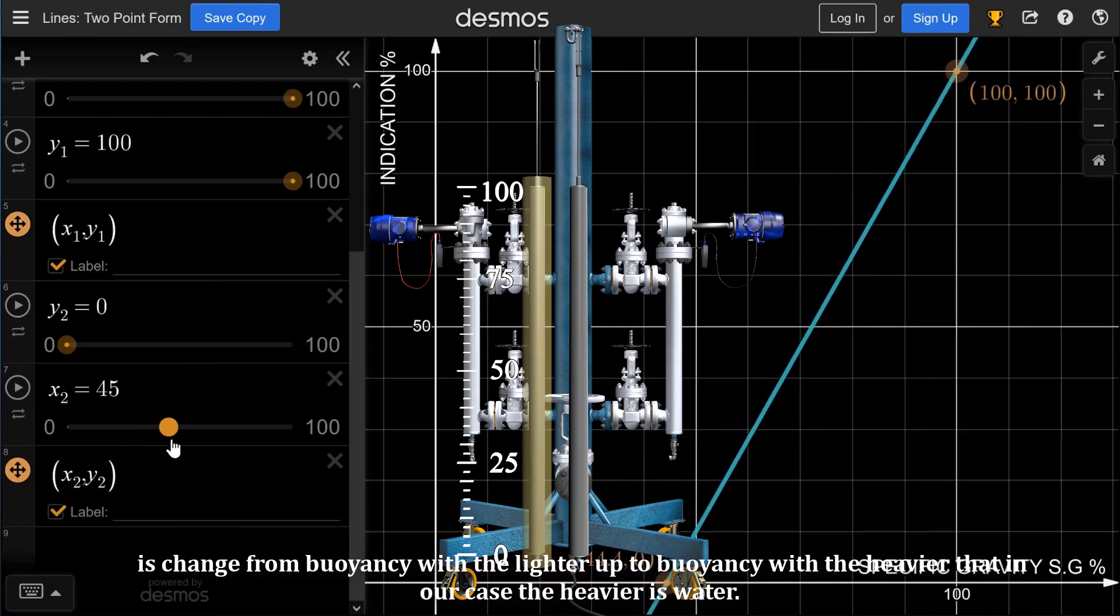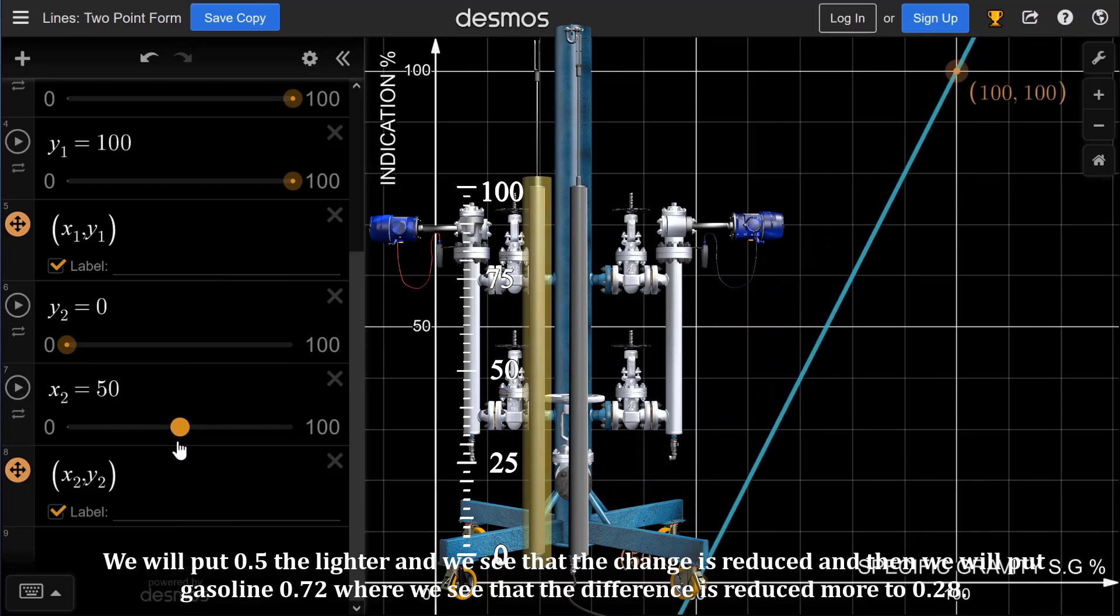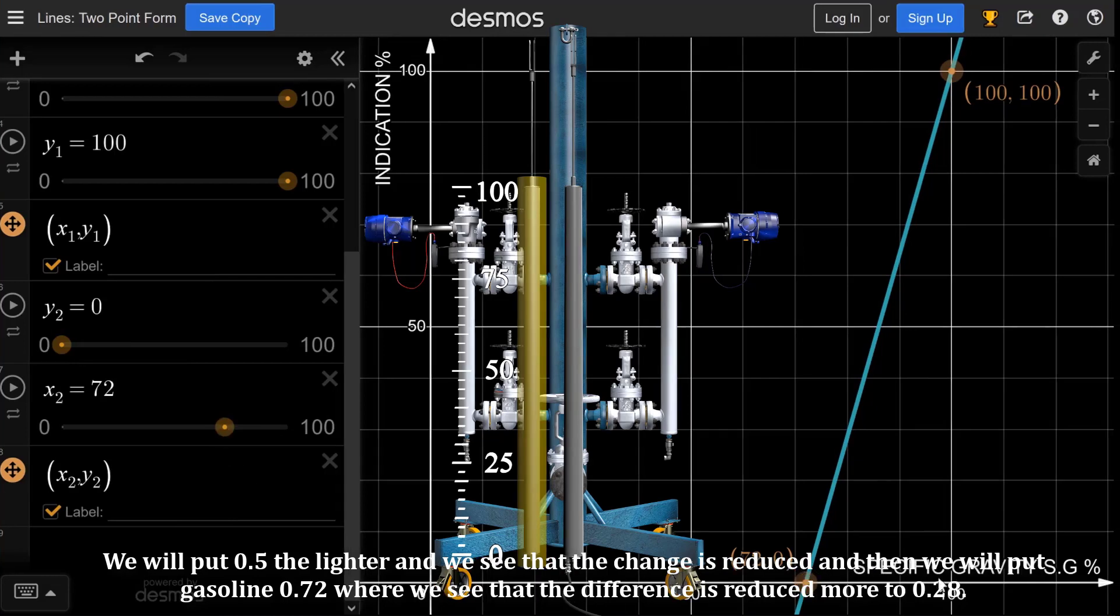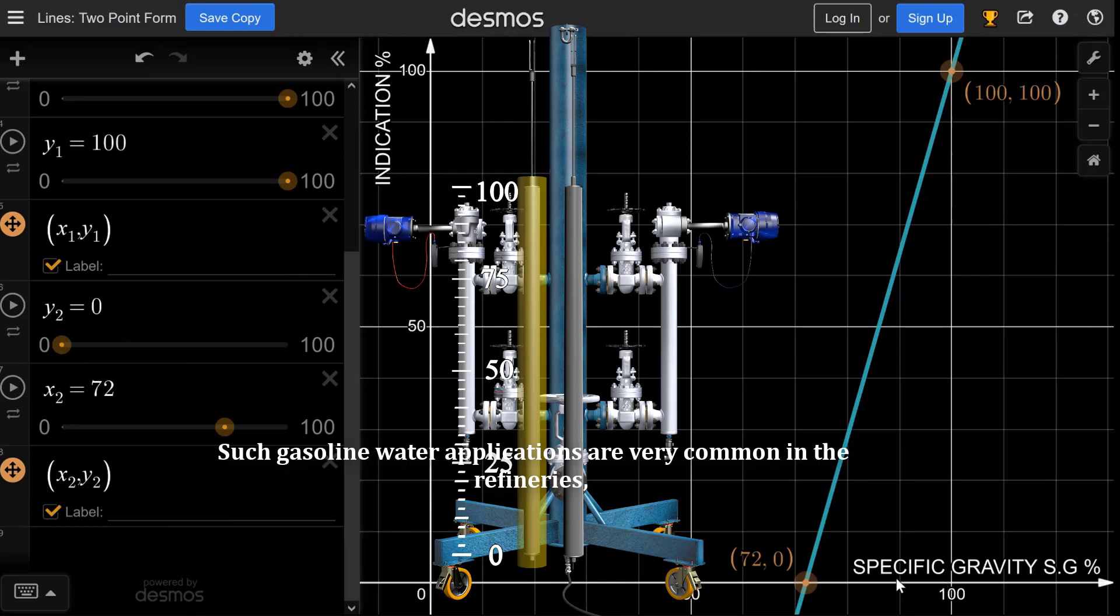We will put 0.5 for the lighter and we see that the change is reduced, and then we will put gasoline 0.72, where we see that the difference is reduced more to 0.28.